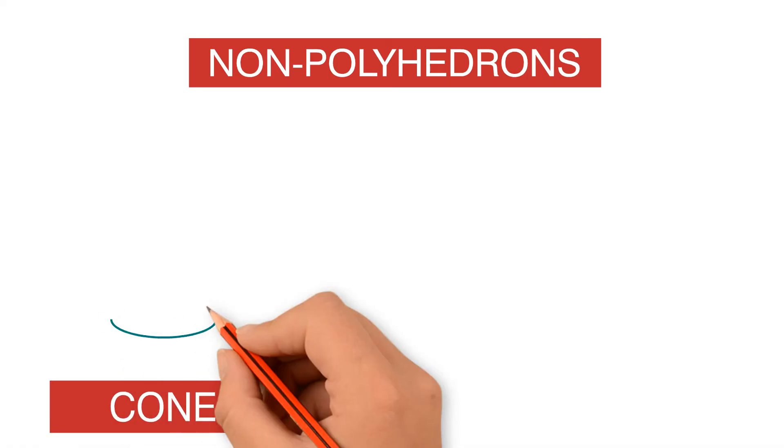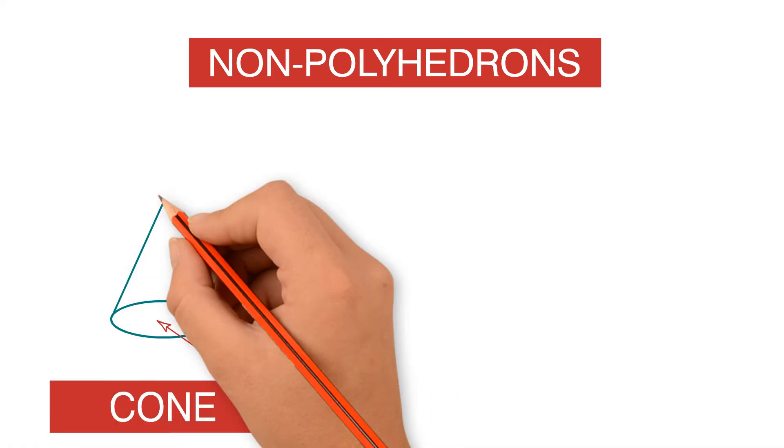Nonpolyhedrons. Some three-dimensional figures have curved surfaces. These solid figures are not polyhedrons. One example of a nonpolyhedron is a cone. A cone has one circular base and one curved surface.